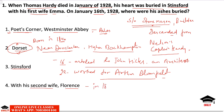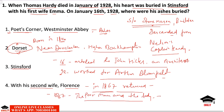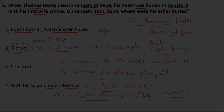He returned home in 1867 and continued work as an architect. However, it came to his mind to write something, so in 1867 he wrote his first novel, The Poor Man and the Lady. However, this novel was never published — even the manuscript was lost.